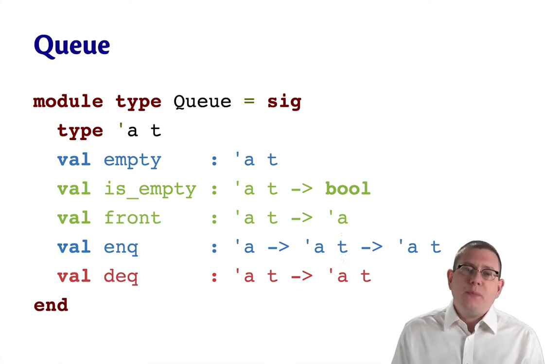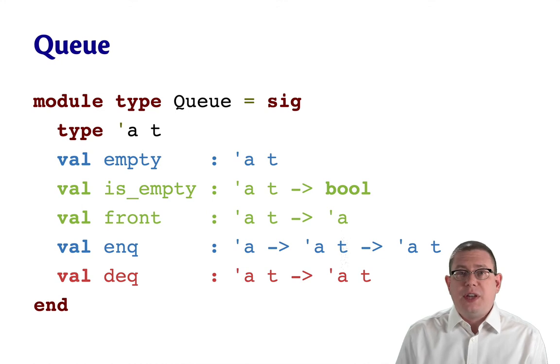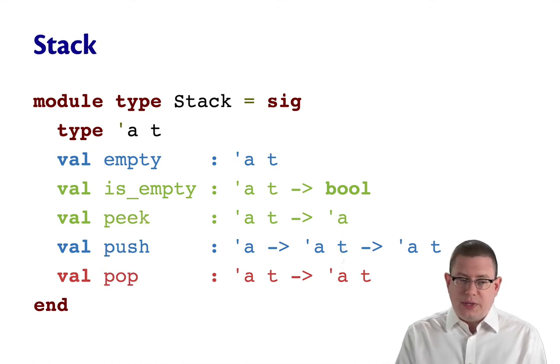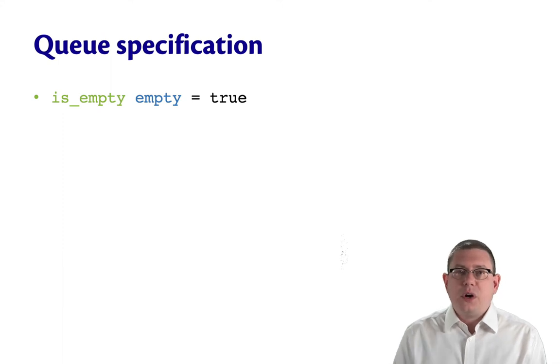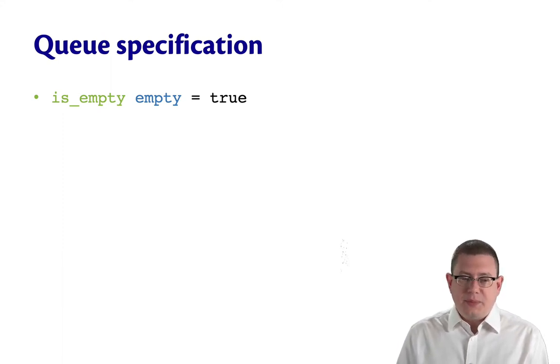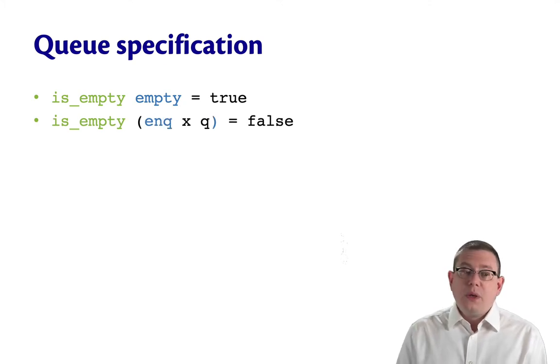Clearly we need more to specify a queue than just the names and types of the operations. To do an equational specification for this, we'll start off the same way as we did with stacks. What is is_empty of empty? Well, of course, that's true. What's is_empty if you apply it to an enqueued element? Well, of course, that's going to be false, because now there's at least one element.